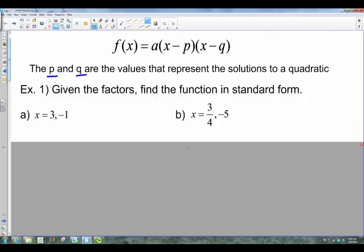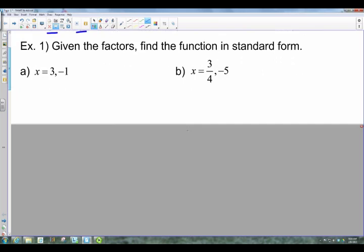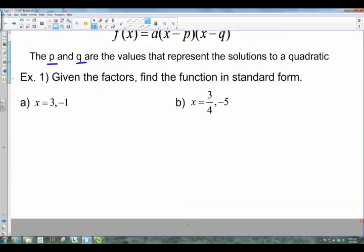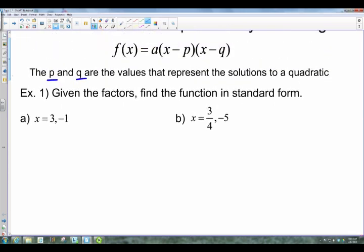Alright, so here's a couple things that you're going to be given. This first example asks you to find the function given certain factors. So basically what they are giving you here is the p and q value, and it really doesn't matter which one is p and which one's q, but those are the two factors you have.